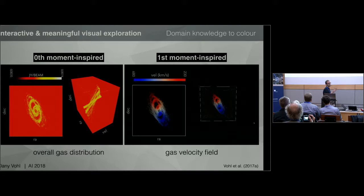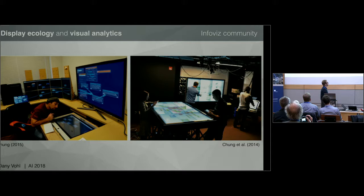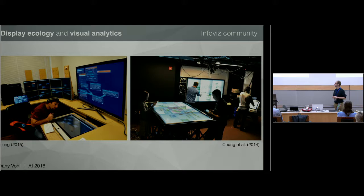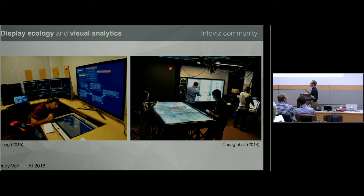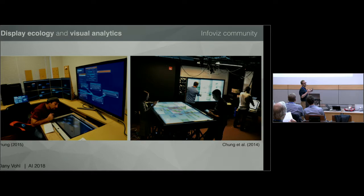By using the GPU we can accelerate parts of the pipeline, but you don't always just want to look at one spectral cube — often you want to look at collections of things. To streamline the process we can draw inspiration from work in the InfoVis community, specifically things like display ecology and visual analytics. A display ecology is basically creating a workspace with different kinds of displays to do different tasks — you want certain tasks on very big displays, others on smaller ones — and you can have personal displays or collaborative work where a team can chat and work together.